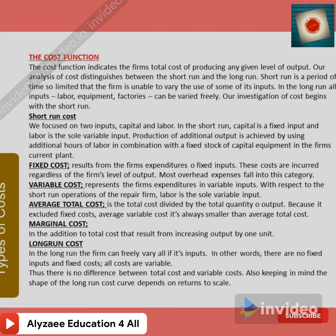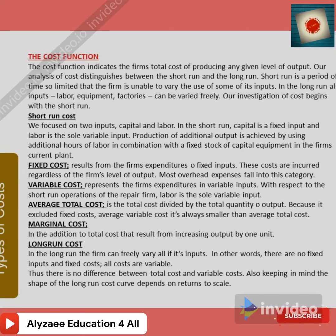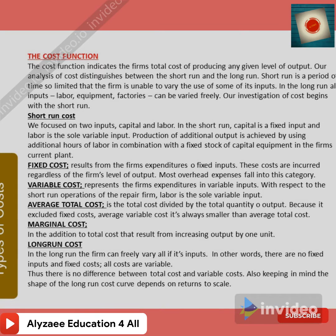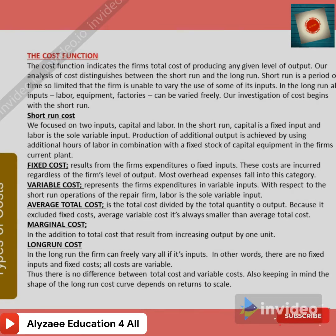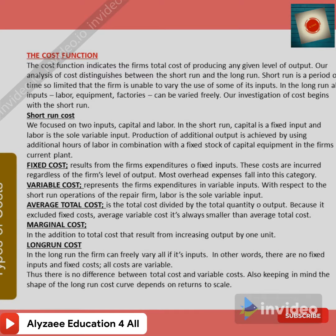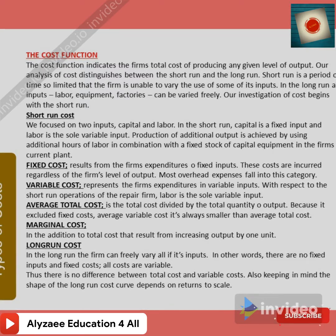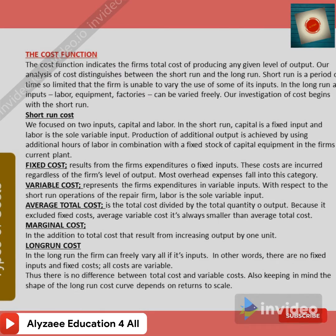Variable cost represents the firm's expenditure on variable inputs. In the short run, labour is the sole variable input. When labour use is reduced, variable costs decrease — similarly, electricity is another example of a variable cost because its use can be reduced.